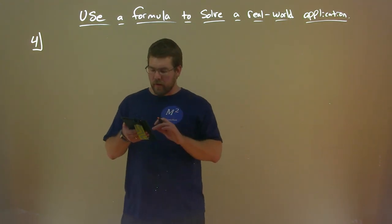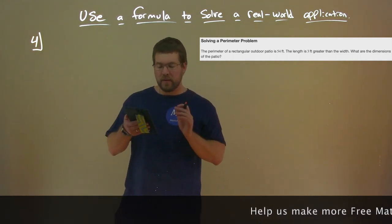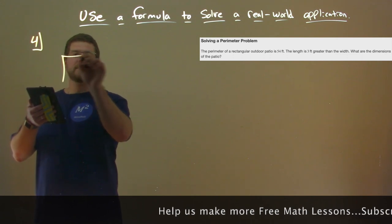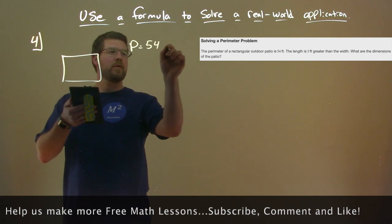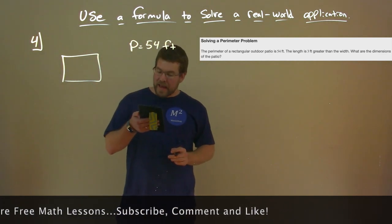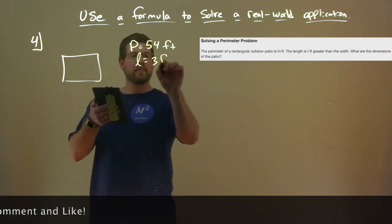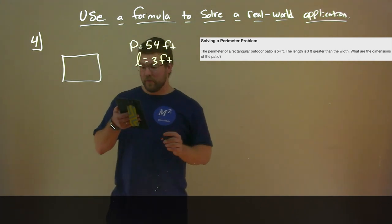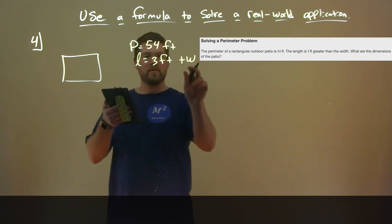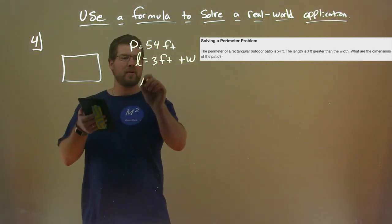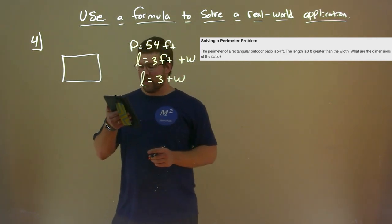Now we have example four — I'll call this the perimeter problem. The perimeter of a rectangular outdoor patio is 54 feet. The length of the patio is 3 feet greater than the width. So our length L is equal to 3 plus the width W. What are the dimensions of the patio?